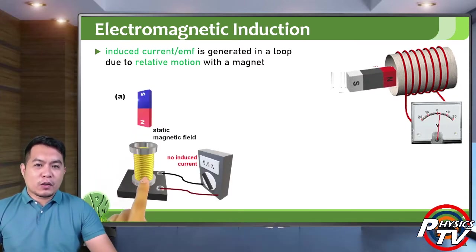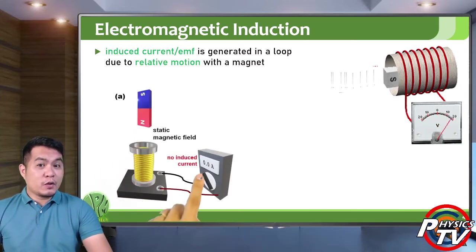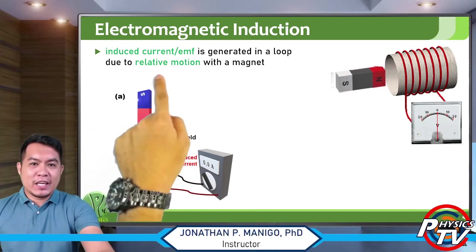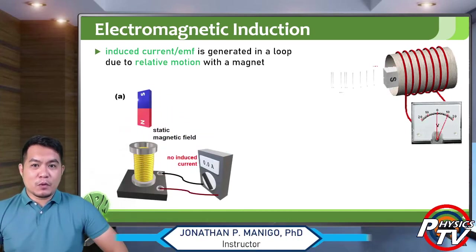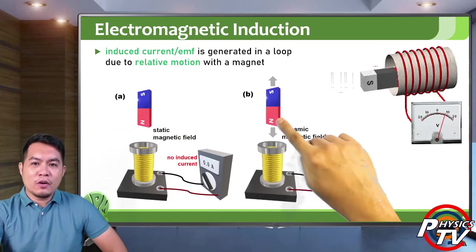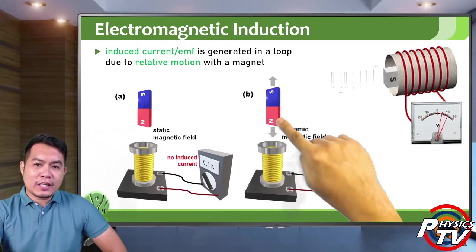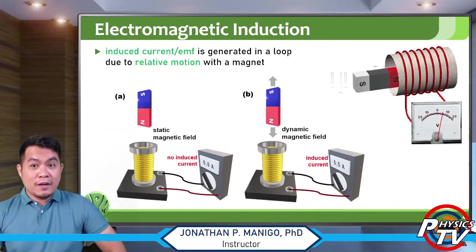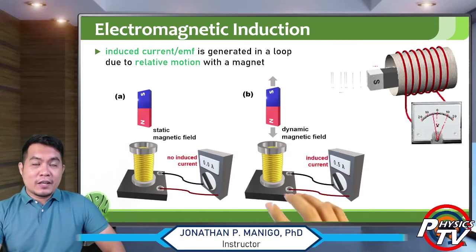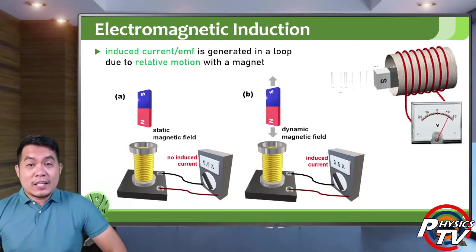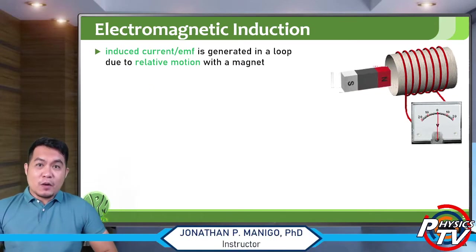There is an induced current when you move a magnet with respect to a coil. When you don't move the magnet with respect to a coil there will be no induced current, because the key here is relative motion. If you move the magnet closer to or farther away from the coil, there is a changing magnetic field, and that causes the induced current.